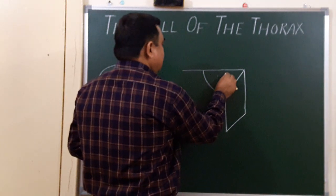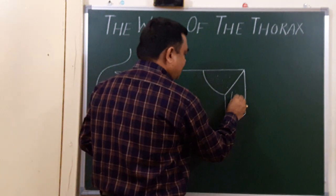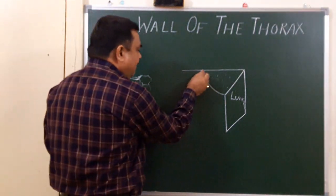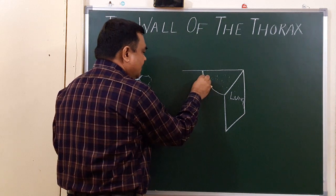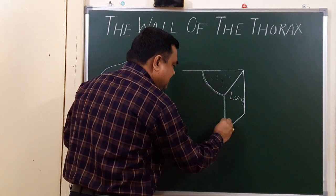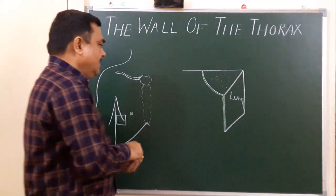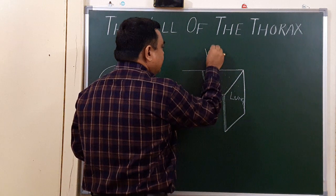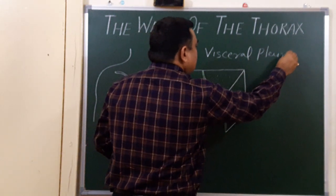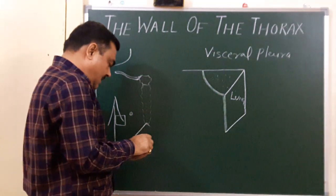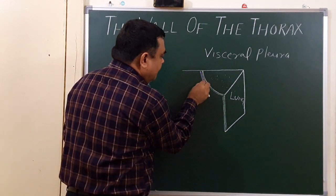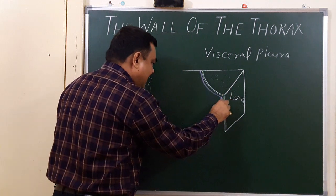This is the lung. This lung is covered by pleura. This pleura is the visceral pleura, which covers the surface of the lung. Then there is the parietal pleura.